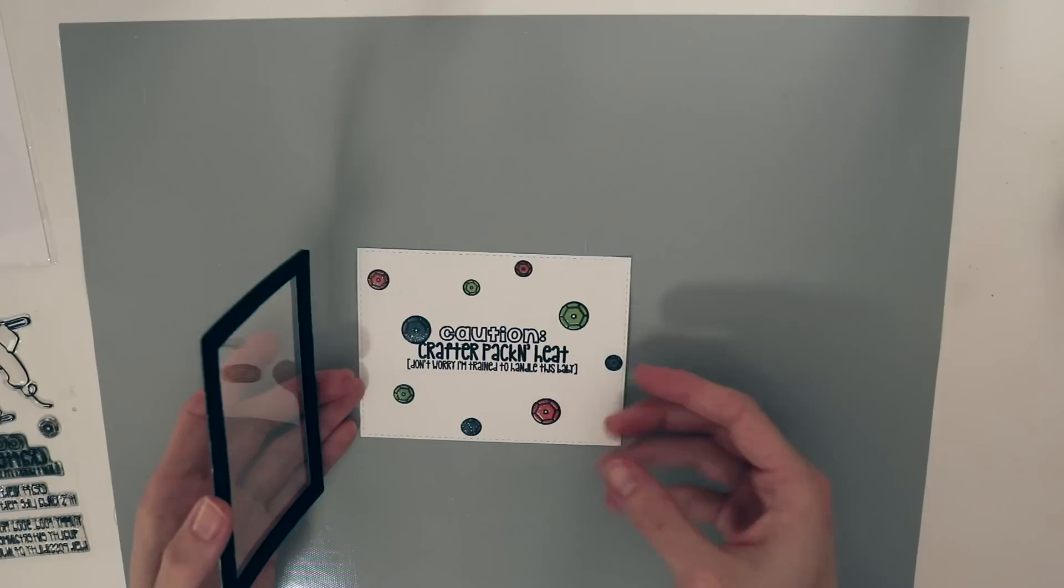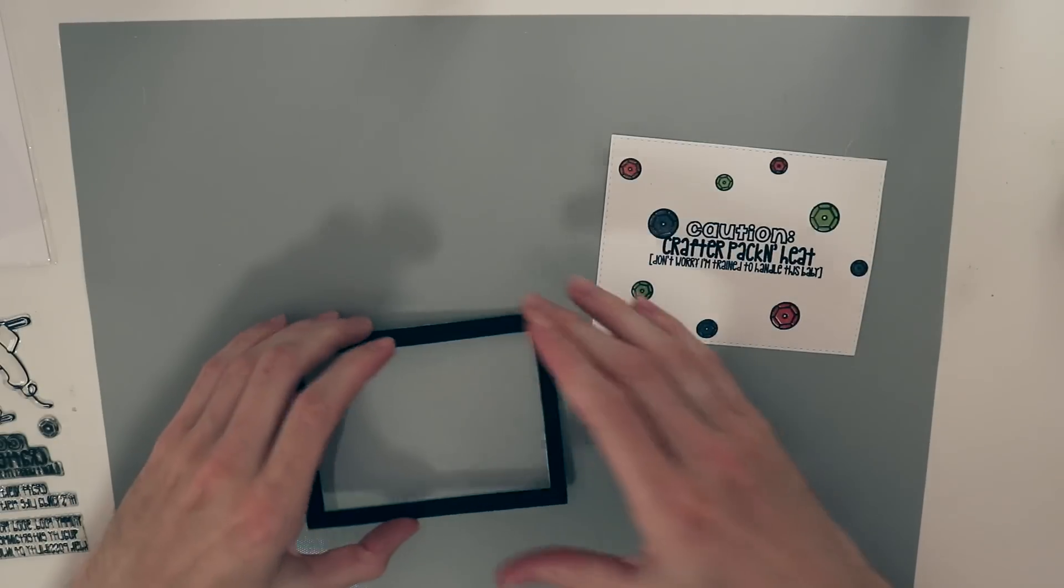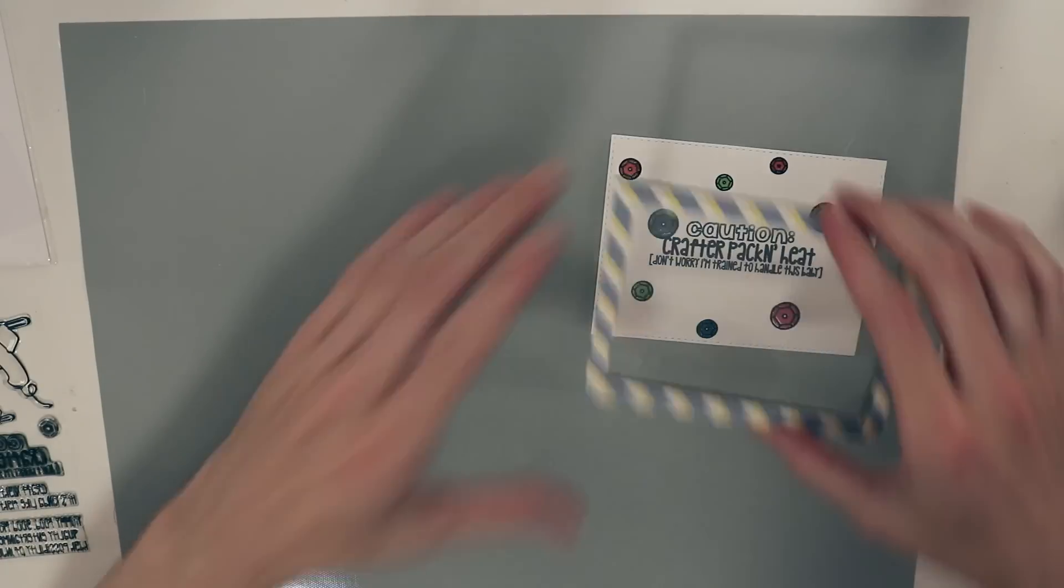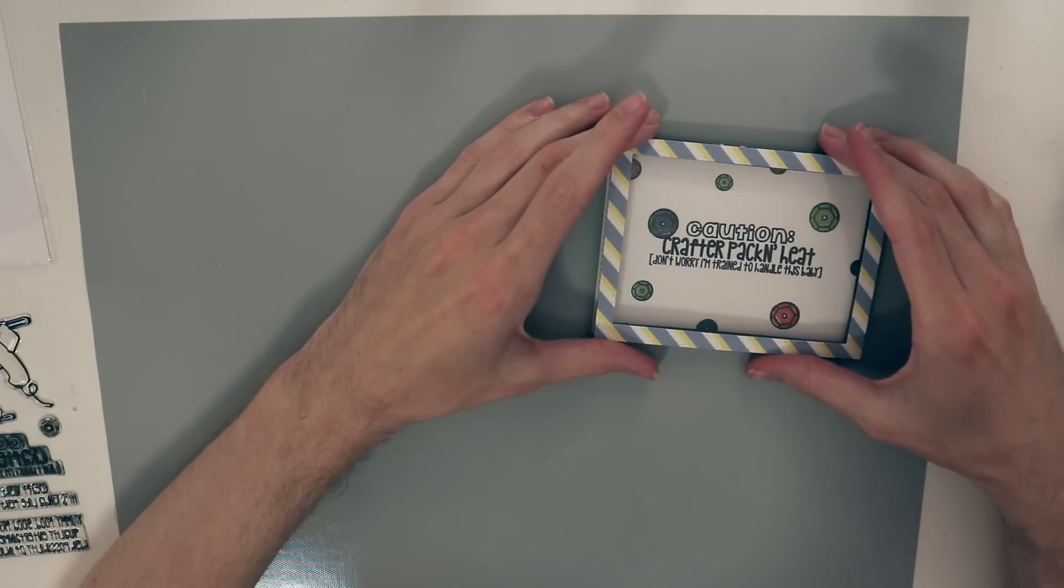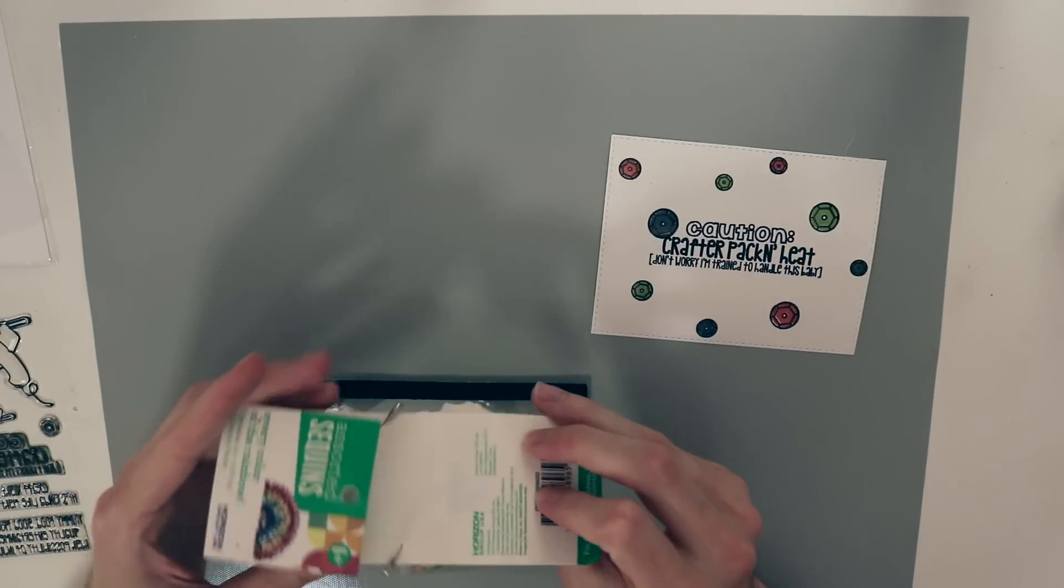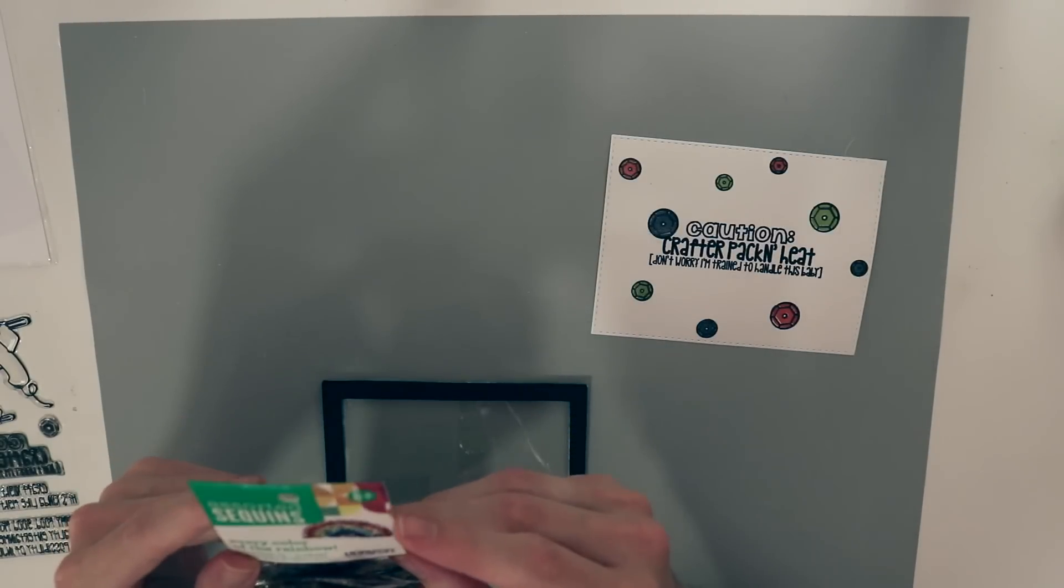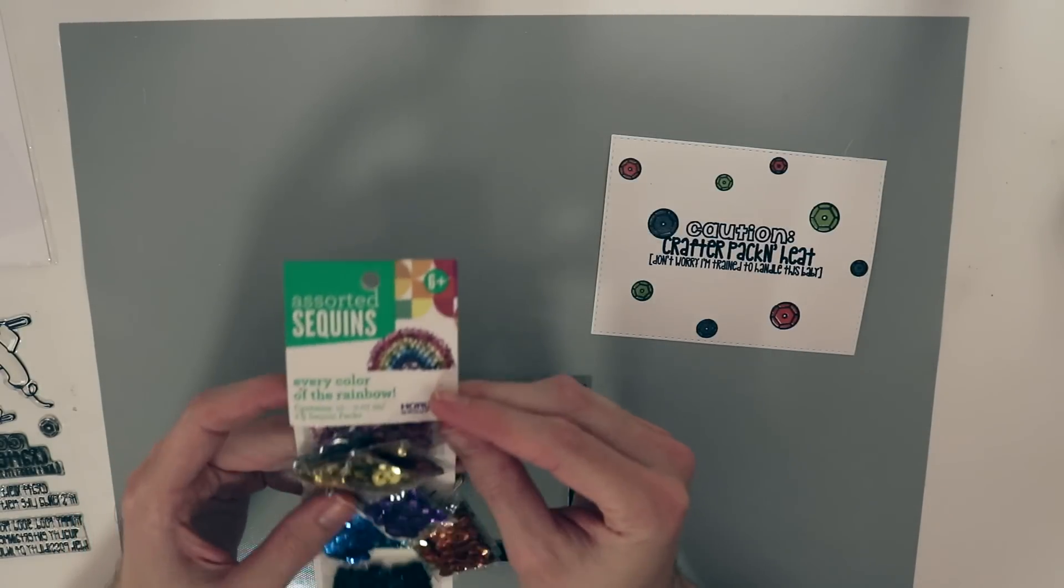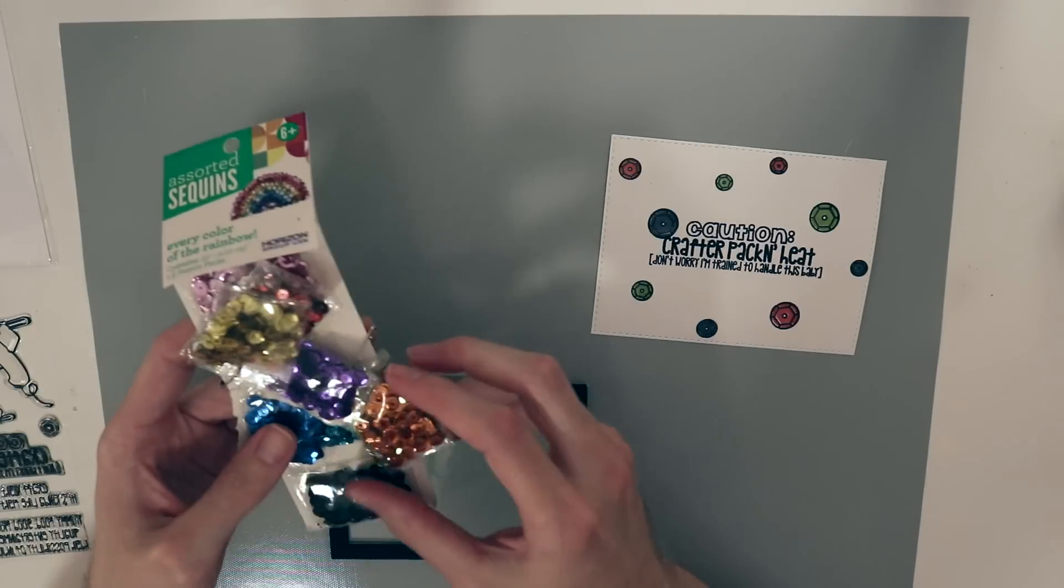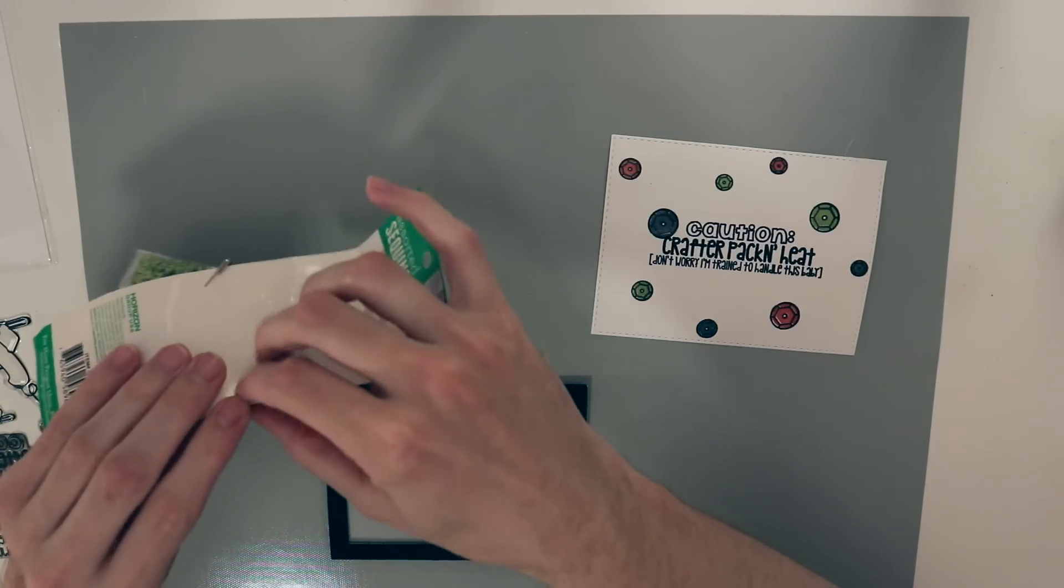Next step we're going to lay the front part of our shaker window down. It's going to end up going just like that and that's going to look really really nice. I have some sequins here. These are from Walmart of all places. These are Horizon Group USA sequins. Can you get a more generic name? Anyways, we're going to go ahead and sprinkle these into the shaker window.